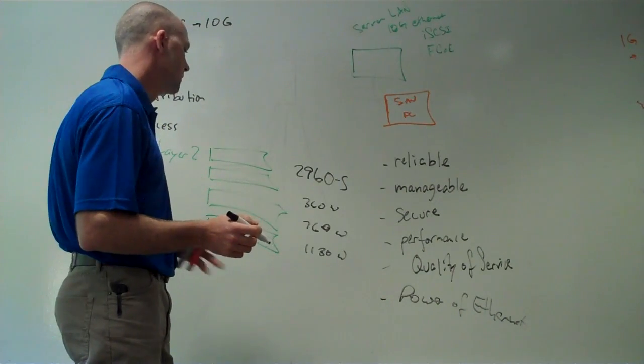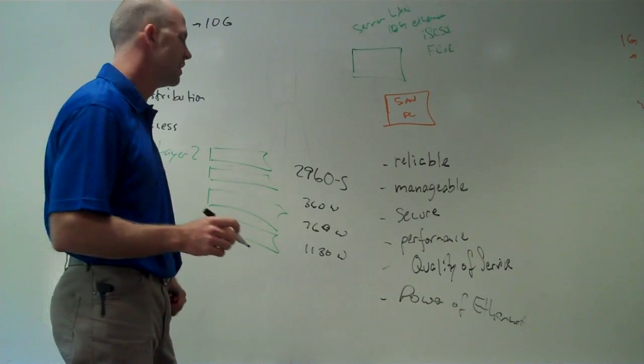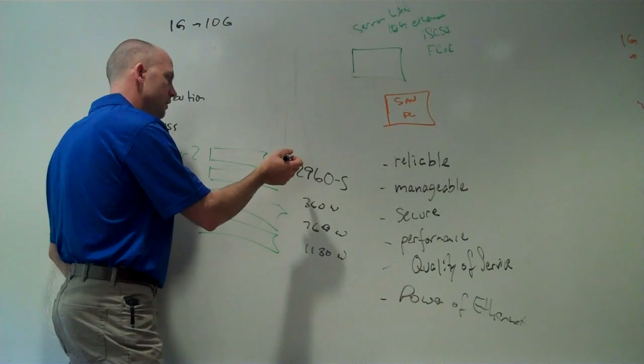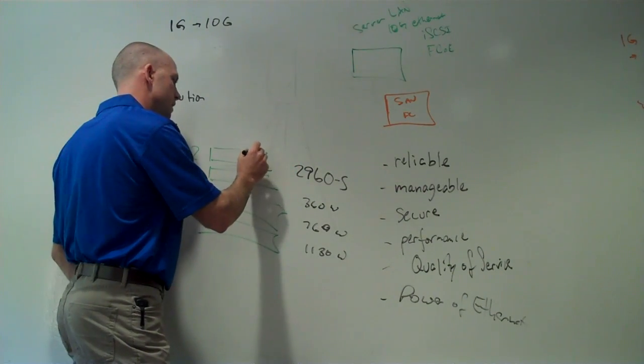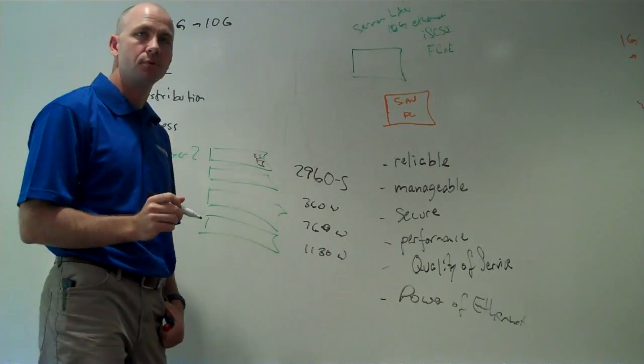So I like the 2960 because it has all these different power capabilities and the power over Ethernet. It's gig to the desktop. And if you just want to use it as a standalone switch, you can. Again, it works great. It's got two 10-gig uplinks and either 24 or 48 access layer ports.